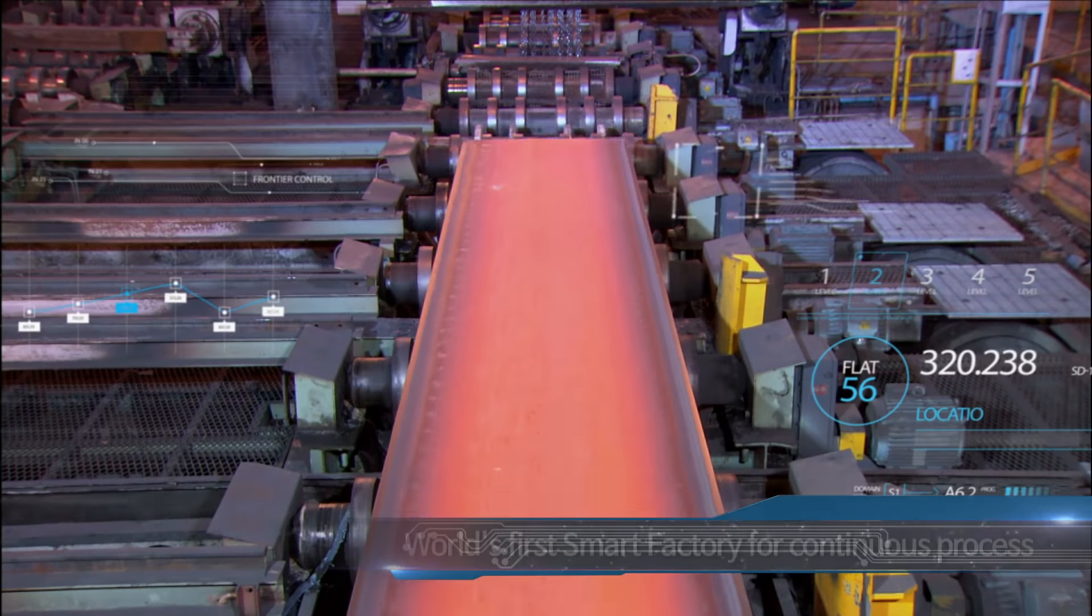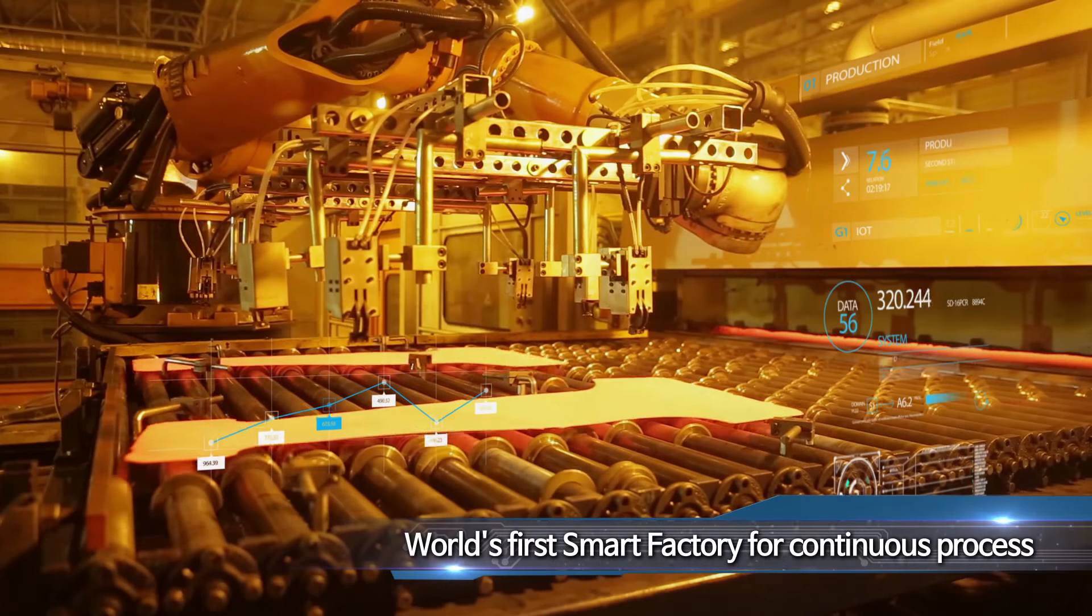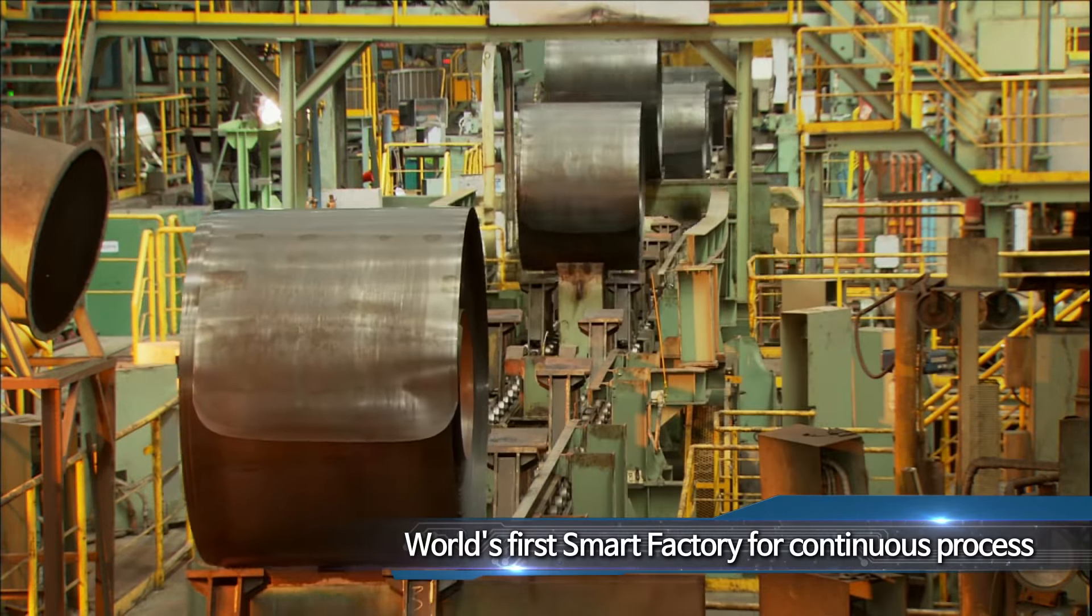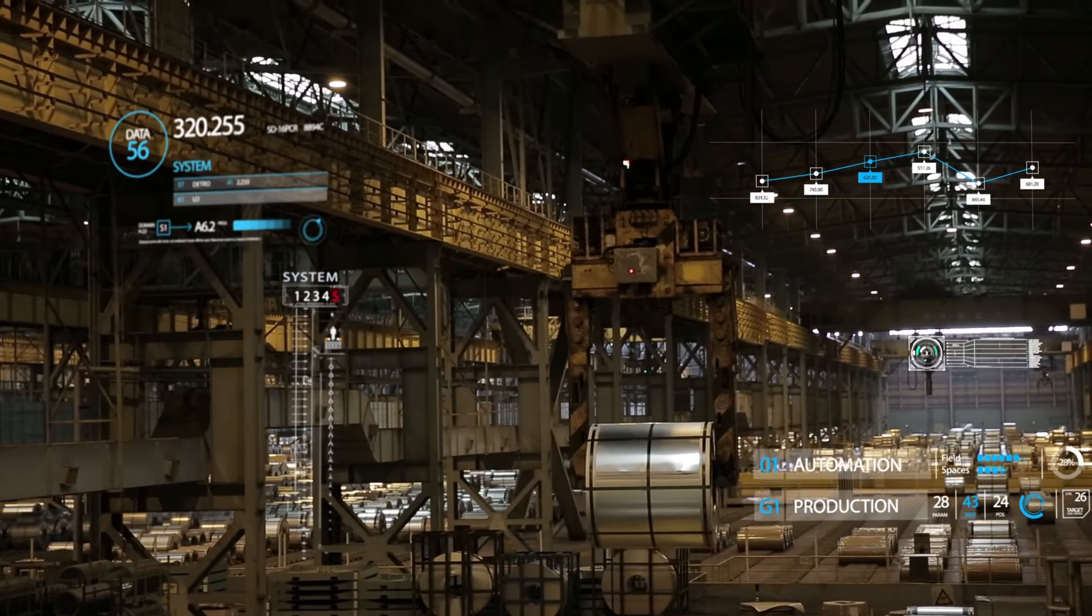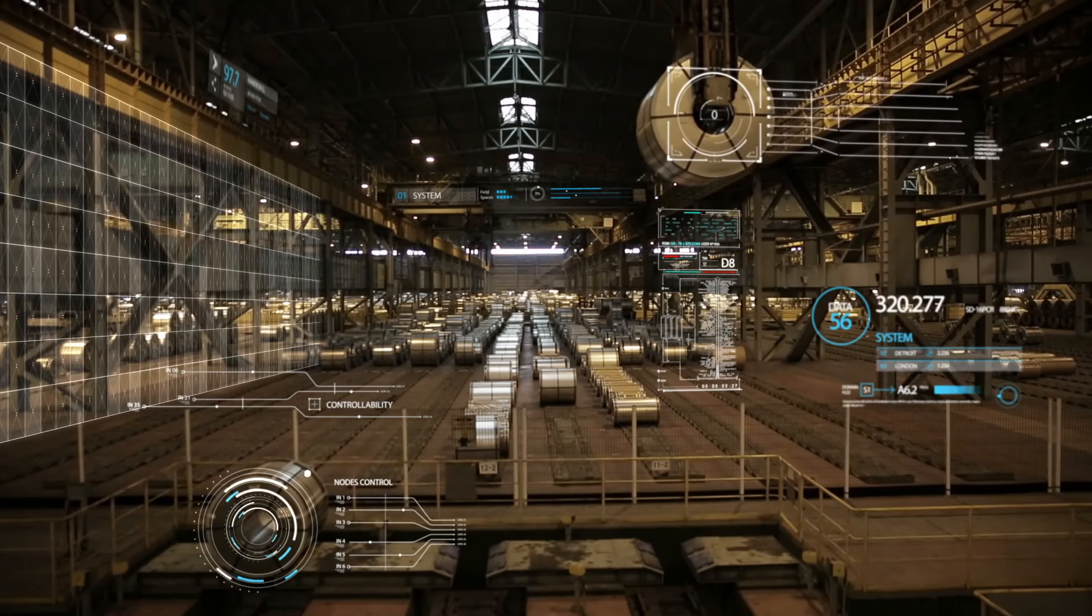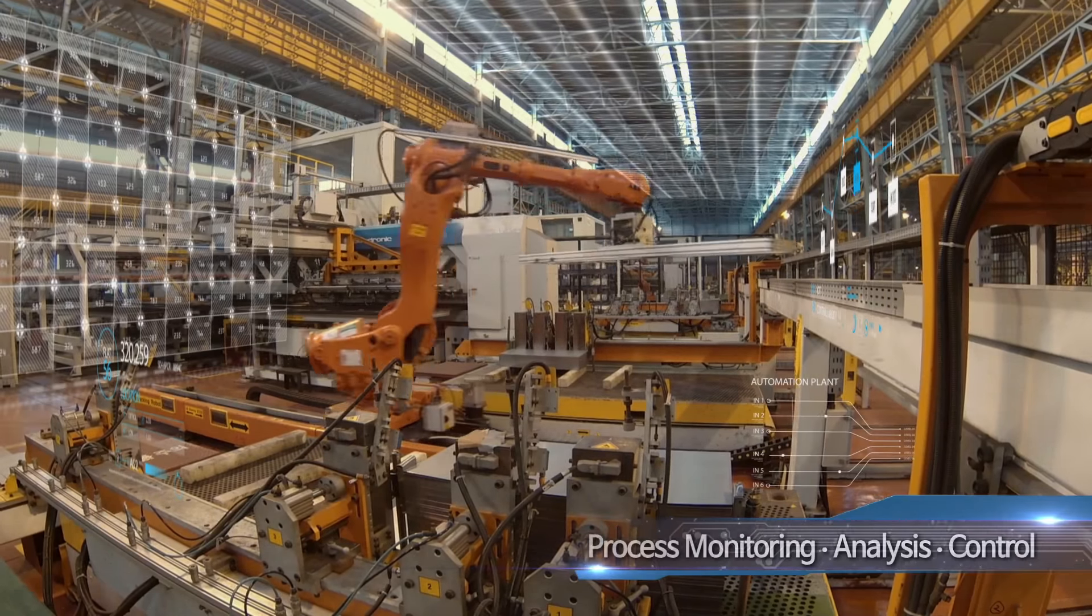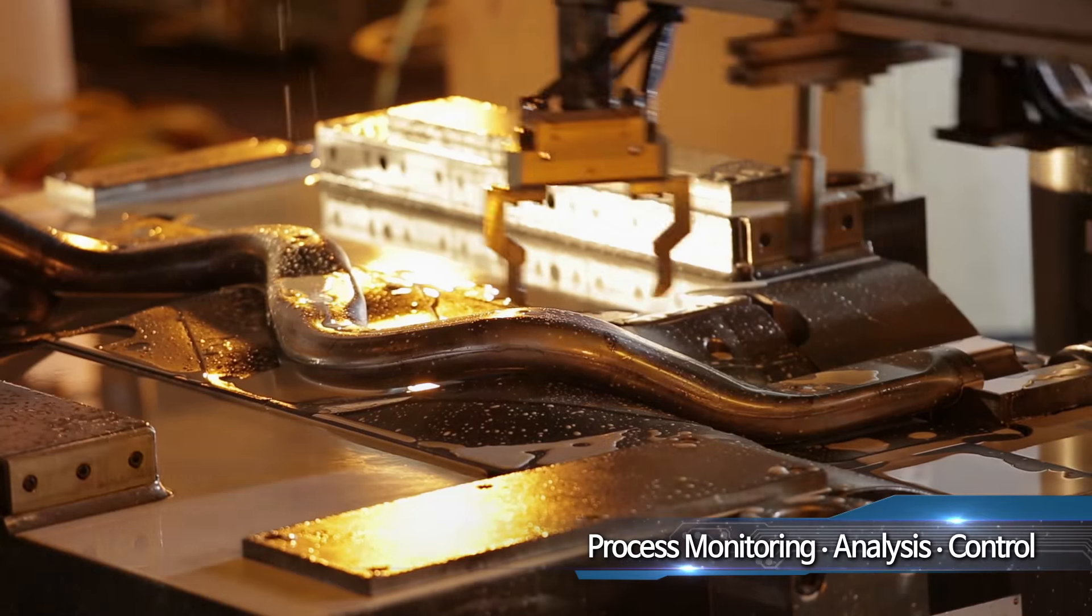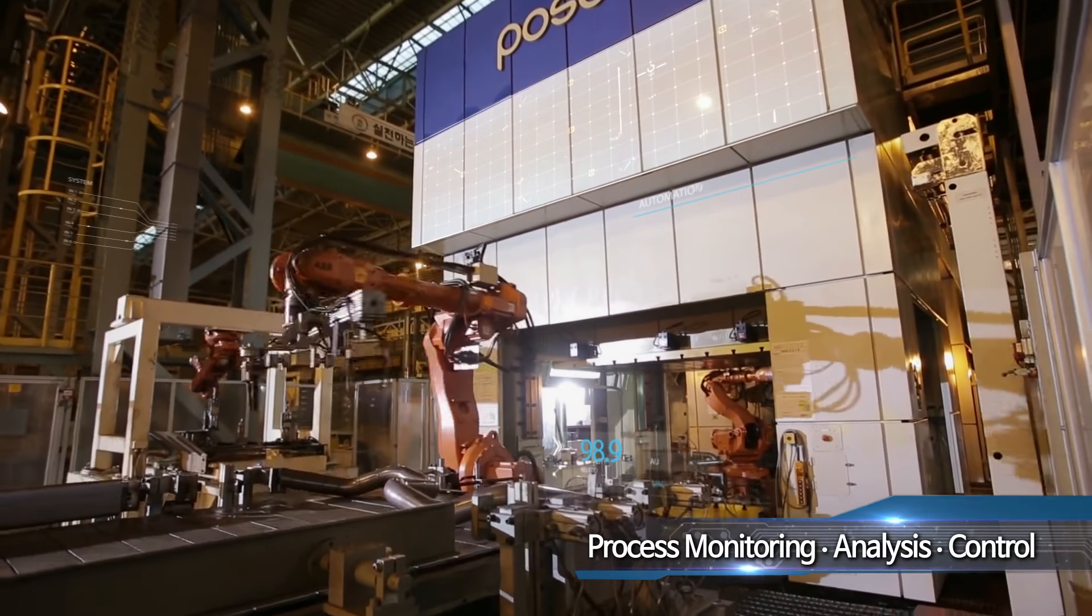POSCO ICT realizes a smarter manufacturing site by realizing the world's first smart factory on the continuous process, such as a steel mill. In smart factory, IoT technology is applied so facilities and machines exchange information themselves.